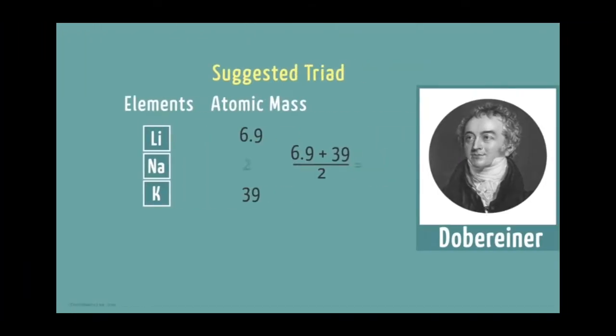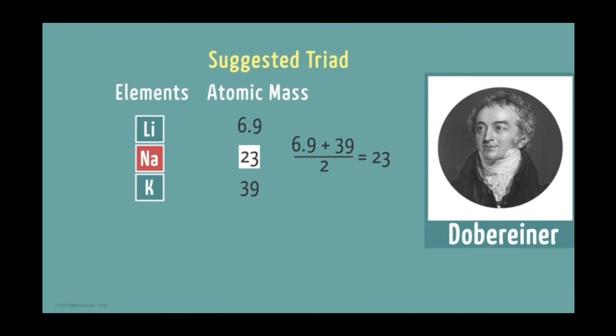Let's understand this with an example. One of the triads consists of lithium, sodium and potassium. Atomic mass of lithium is 6.9 and atomic mass of potassium is 39. If you take the average, what will be the answer? Yes, you will get 23. And 23 is the atomic mass of sodium.